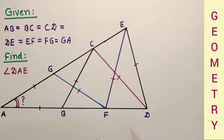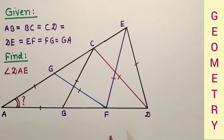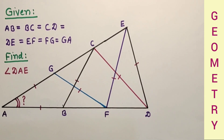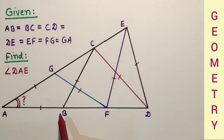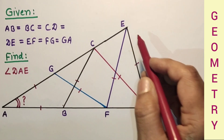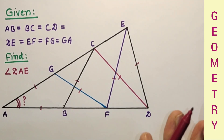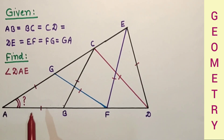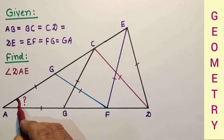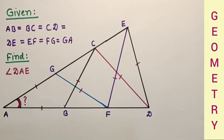This question involves a system of isosceles triangles. The question is a bit confusing but very interesting — if you do not concentrate carefully, you may face an optical illusion. We are given AB = BC = CD = DE = EF = FG = GA. All sides are equal. We have to find angle DAE. I suggest viewers give it a try once before looking at the solution.